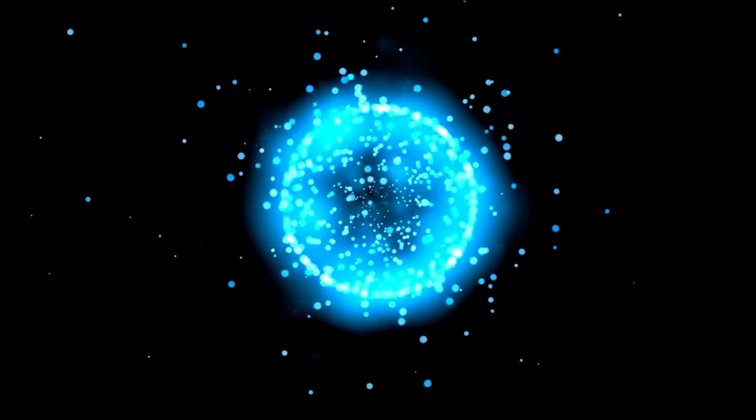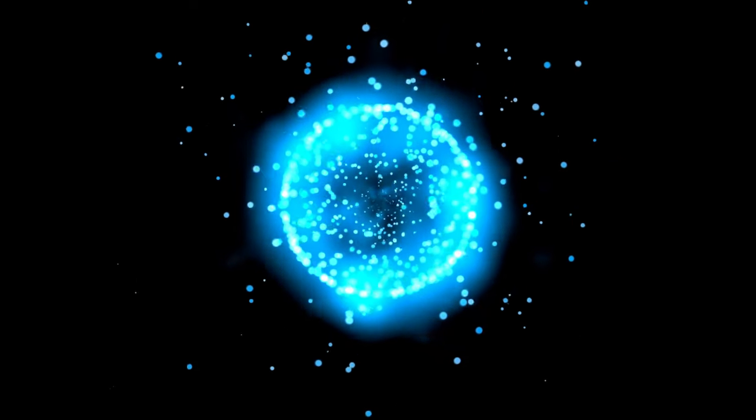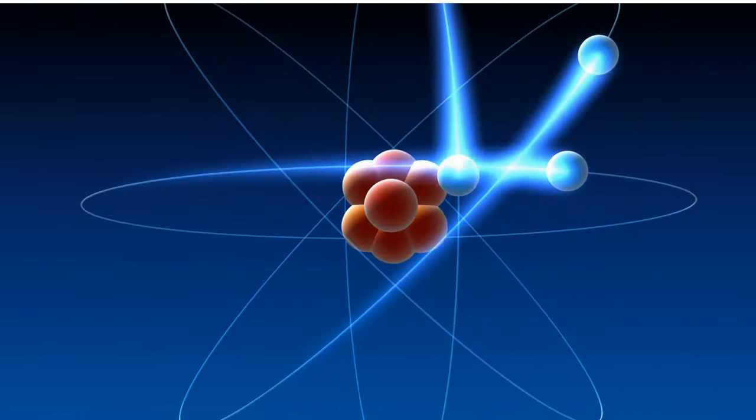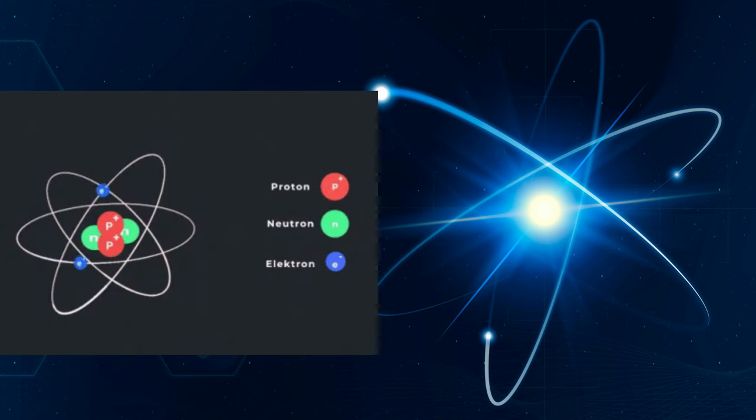An atom is the smallest unit of matter that can exist. It is made up of three subatomic particles: protons, neutrons, and electrons.